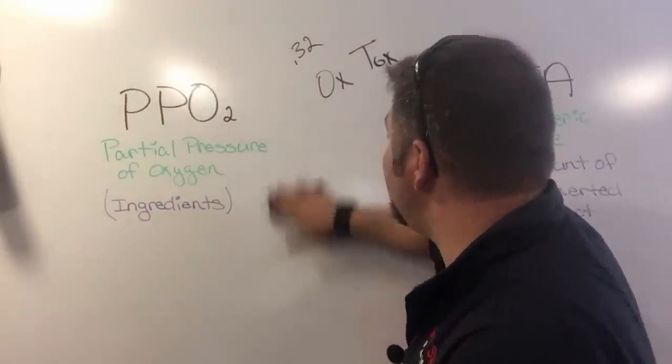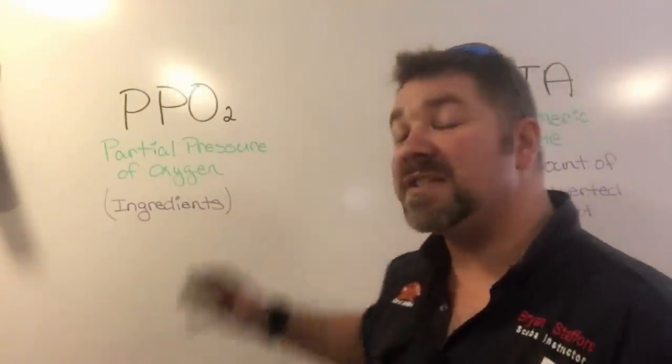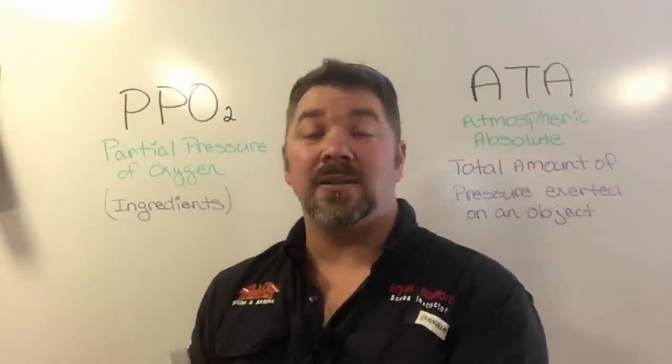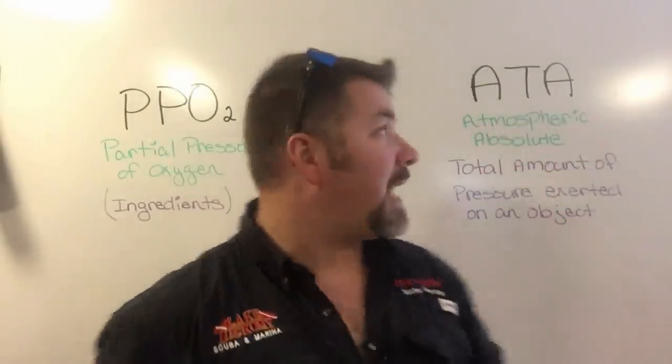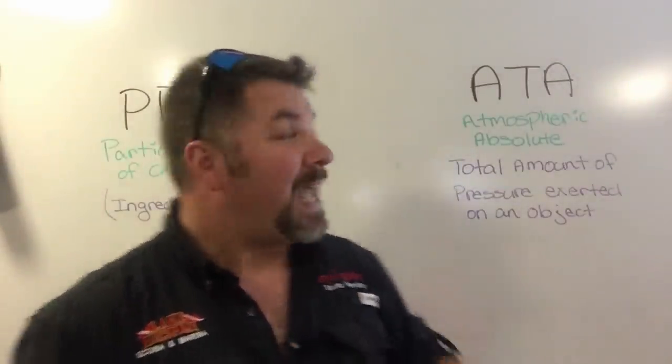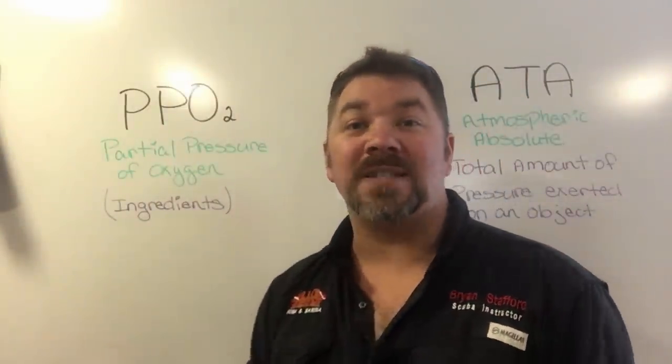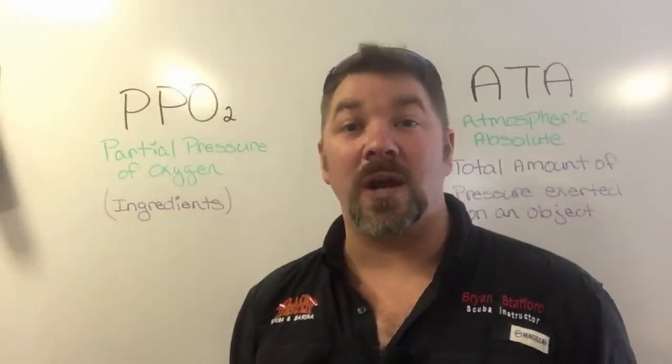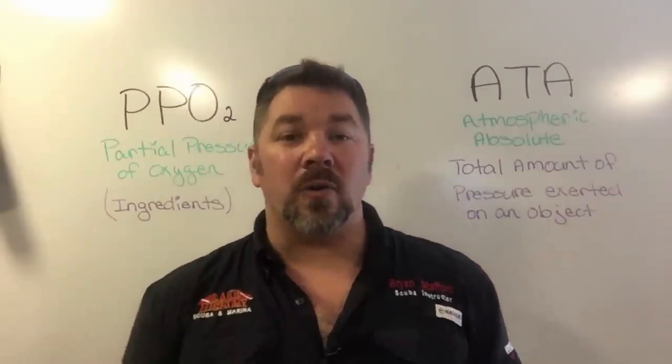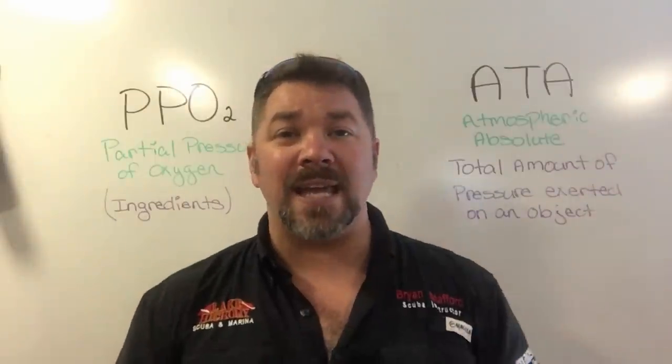I hope this is a little bit easier for you to understand what PPO2 and what ATA is. PPO2 is simply the ingredient that makes up a whole—whatever percent of oxygen is put inside that cylinder to make up that total breathing gas. The ATA is the total amount of pressure that's exerted on a body, and depending on the total amount of pressure, that will determine what the PPO2 is. It will either increase or decrease the potency or effect level of that gas.